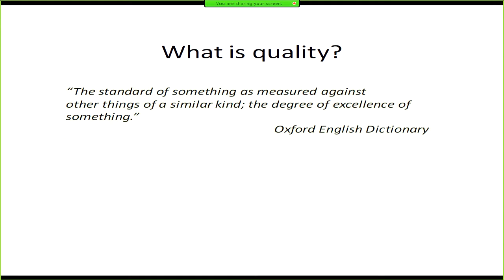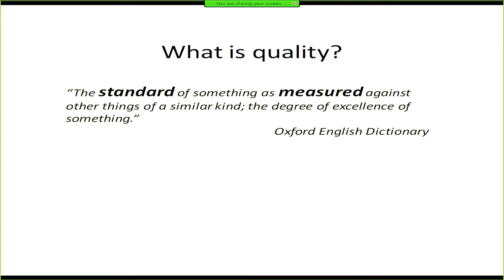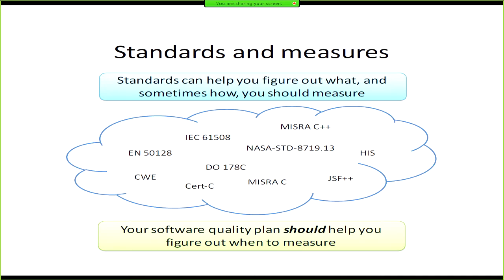To start, we have a definition pulled from the Oxford Dictionary, and I want to zero in on two words: 'standard' and 'measured.' Yesterday I heard from the SARB group with Lorraine talking about quality attributes, which is a fantastic thing to leverage. There are a whole bunch of other standards out there that also come into play when talking about quality — which ones to use, which ones to combine. It's not always clear to people. So we're trying to demystify some of that and give you a good starting point.